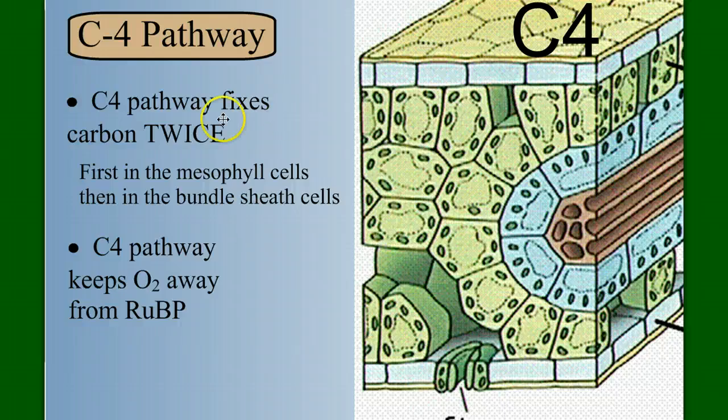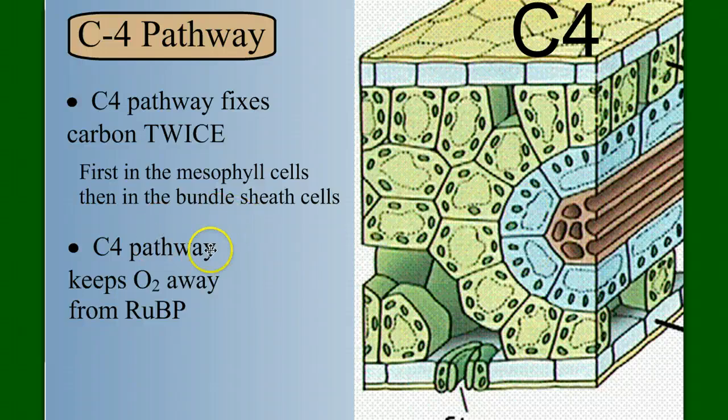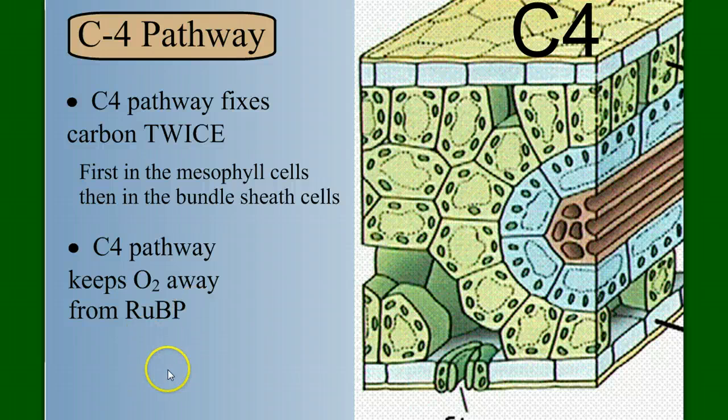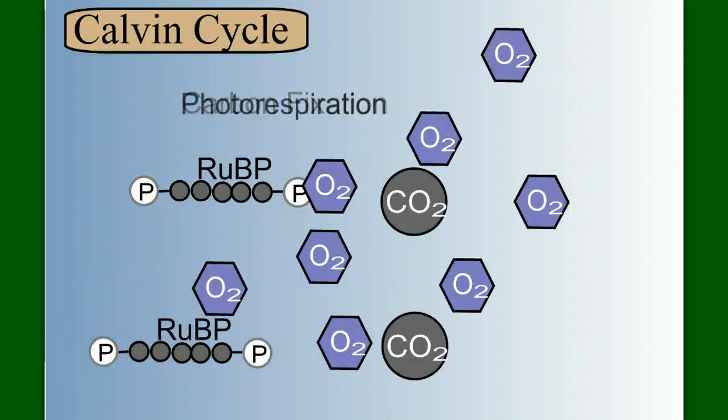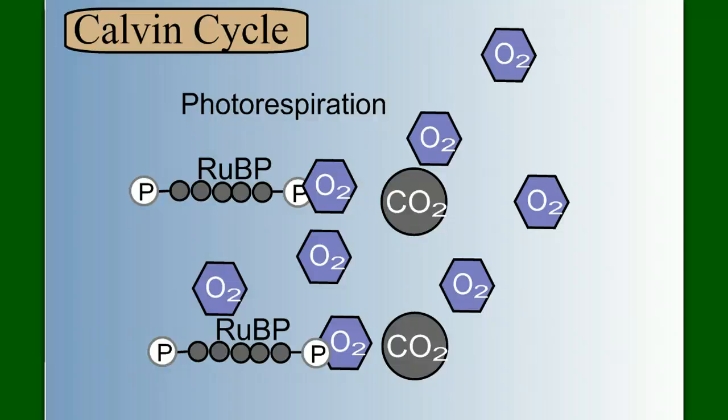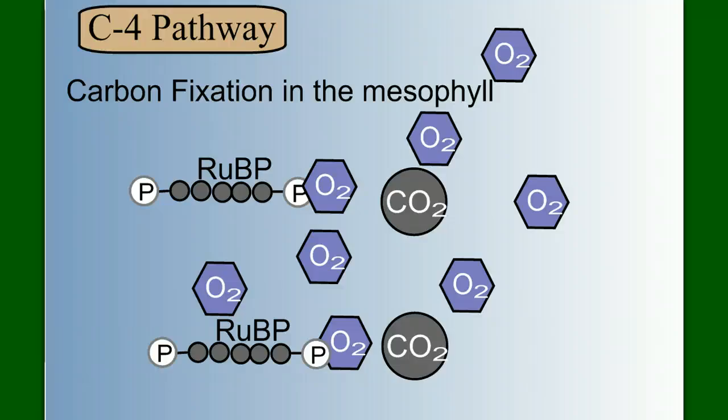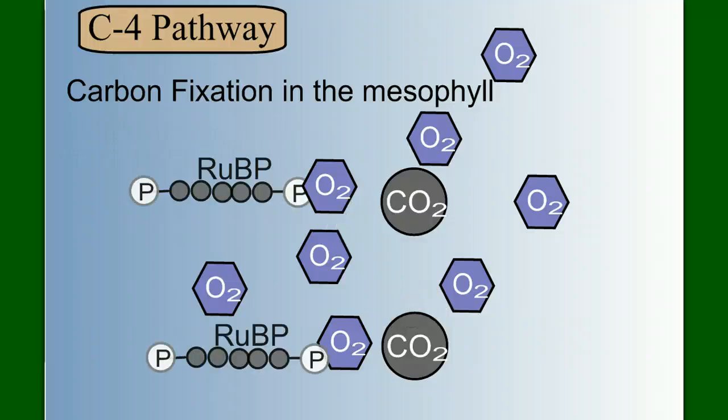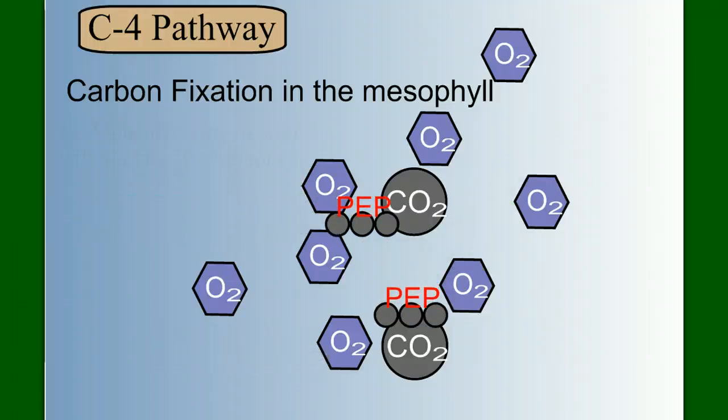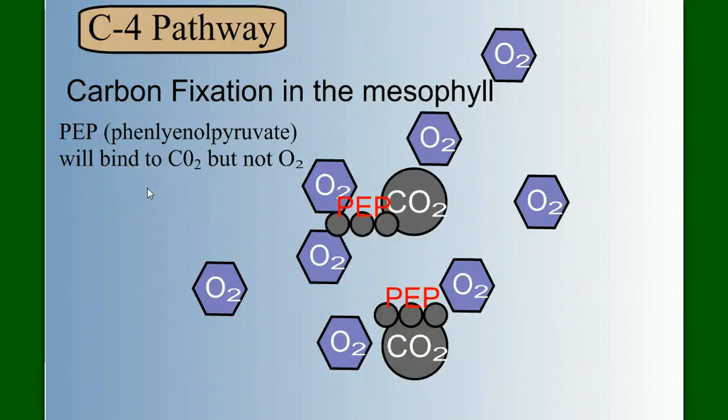In the C4 pathway, we're going to fix carbon twice. Meaning we're going to grab carbon dioxide two different times. First, in the mesophyll cells out here, and second, in the bundle sheath cells. And in doing so, the C4 pathway is going to keep oxygen away from RuBP. So remember, RuBP binds with carbon dioxide to fix it, but in an environment where there's lots of oxygen, we get photorespiration. So our solution to this is to not use RuBP. For carbon fixation in the mesophyll and the C4 pathway, we use a different molecule called PEP. PEP, notice that PEP will ignore the oxygen and go right to the carbon dioxide. PEP is more discriminant. It's picky. PEP, or phosphoenolpyruvate, will bind to carbon dioxide, but not to oxygen.